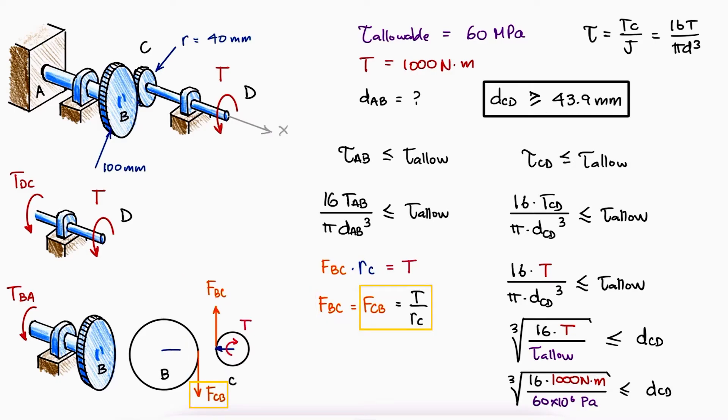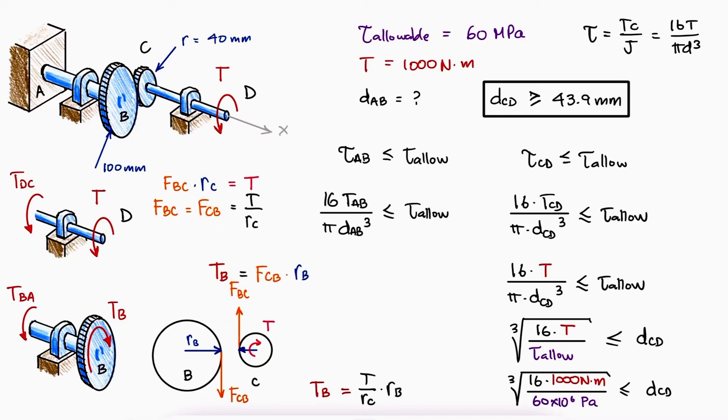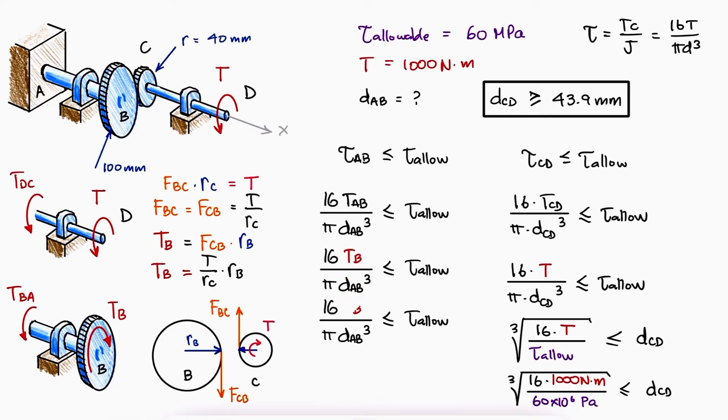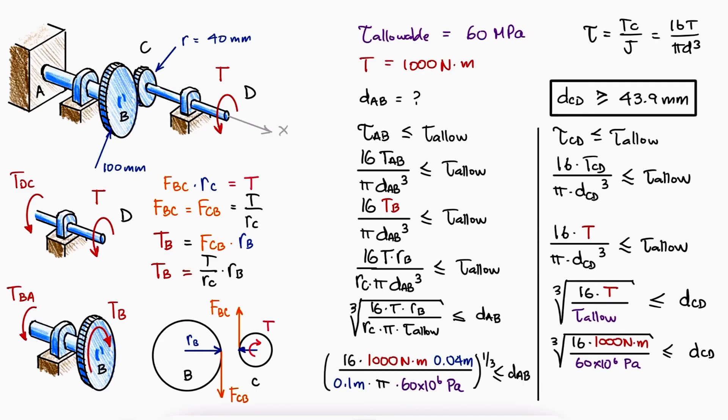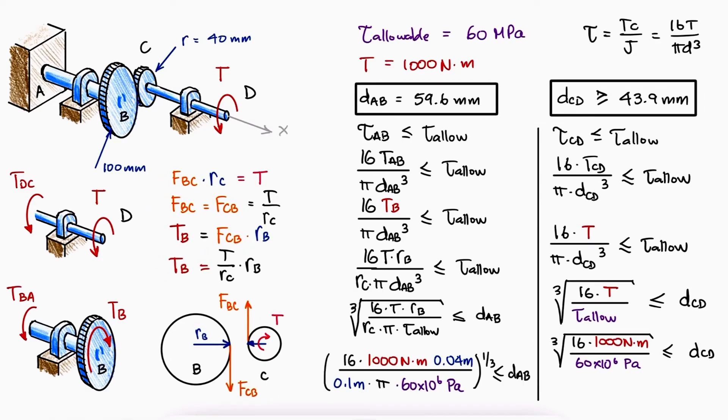With the value for FCB and the radius of gear B, we can find the torque that affects gear B. The internal torque in shaft AB will therefore have the same magnitude as TB, which we now have in terms of the external torque T and the radii of the gears. Solving for the diameter of AB and substituting the values, we find that the diameter of shaft AB should be 59.6 millimeters or larger.